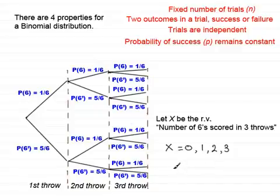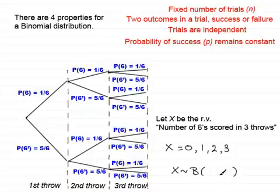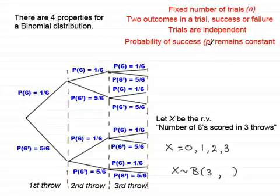We write this as X is distributed binomially, using a squiggly line and a capital B. To describe this distribution we give two parameters: n, the number of trials — here three — and p, the probability of success — here one sixth. So we write X ~ B(3, 1/6). This is the notation used to describe a binomial distribution.